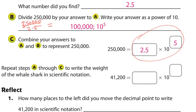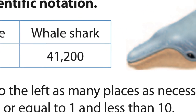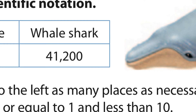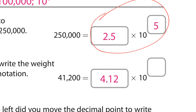Now repeat those steps to write the weight of the whale shark. I have to create a number between 1 and 10, which is 4.12. So 4.12 times 10 — it's always times 10. Then I simply count how many times I moved the decimal: 1, 2, 3, 4. So 4.12 times 10 to the fourth. That is scientific notation. We have the standard notation and the scientific notation — they are equal to each other.